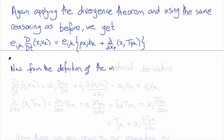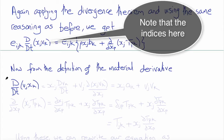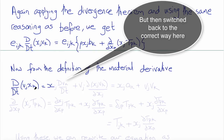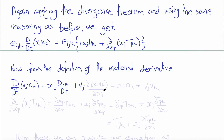From the definition of the material derivative, we can write that the material derivative with respect to time of x_j v_k will be x_k times the material derivative of v_j plus v_j times the partial derivative del x_j. So this first term is x_j times the acceleration a_k, and the second term is v_j times v_k, since del x_j of v_k with respect to x_j is v_k.